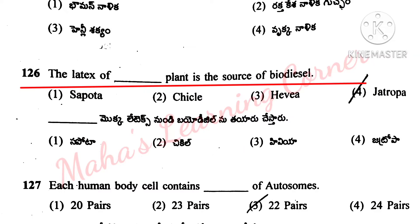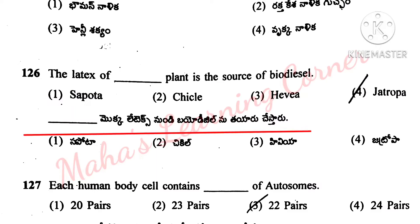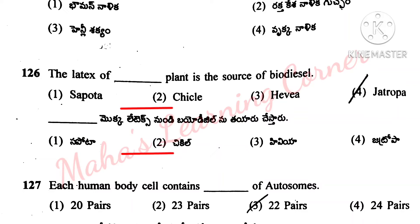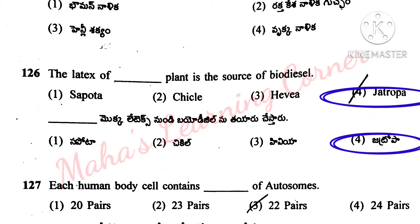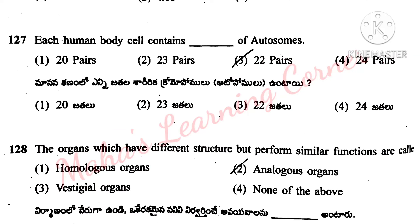The latex of dash plant is the source of biodiesel. Options: Supporta, chikil, hivya, jatropa. Correct answer is option 4: Jatropa.